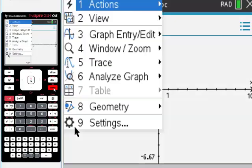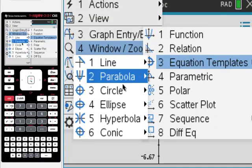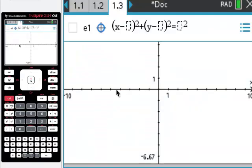But what you can do is you can go to the menu and where it says graph entry or edit, just go to this, open it, and then equation templates is what you want. Choose circle, so here it is.